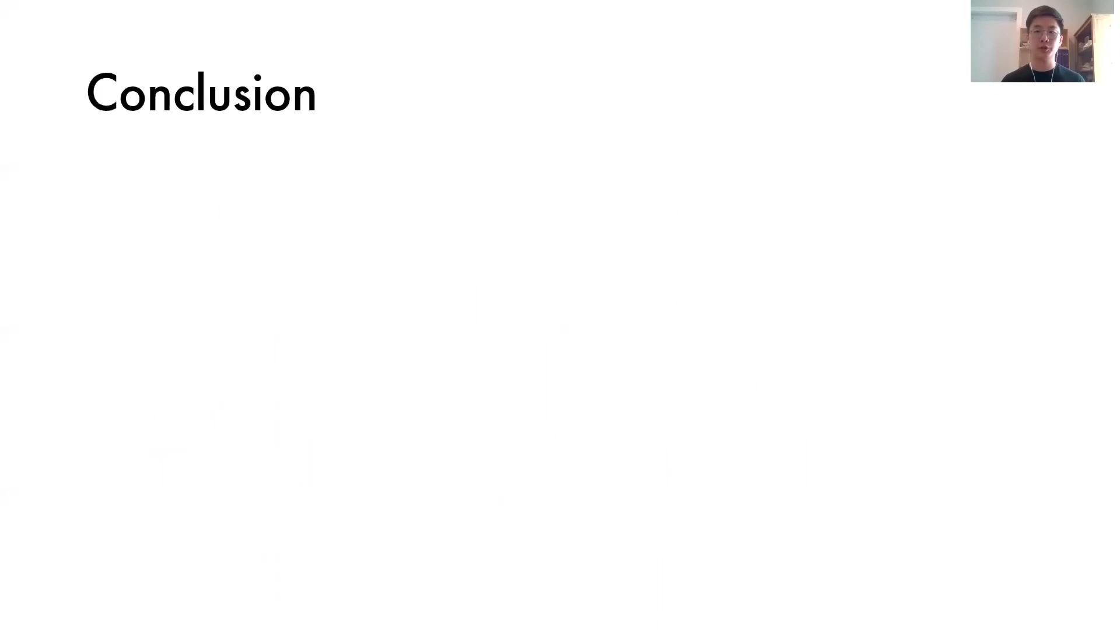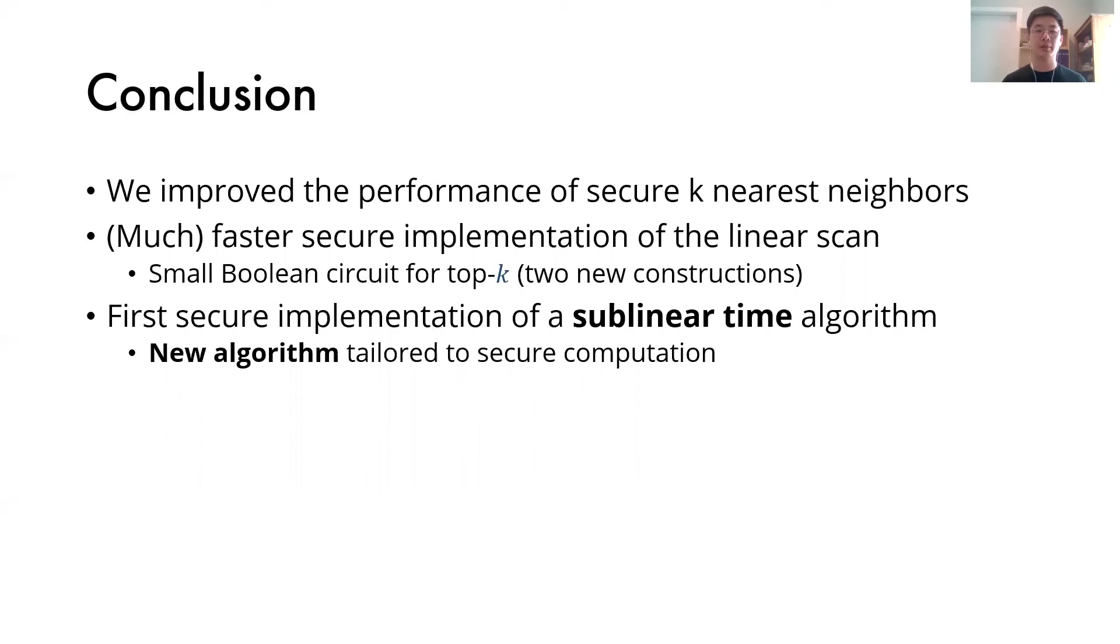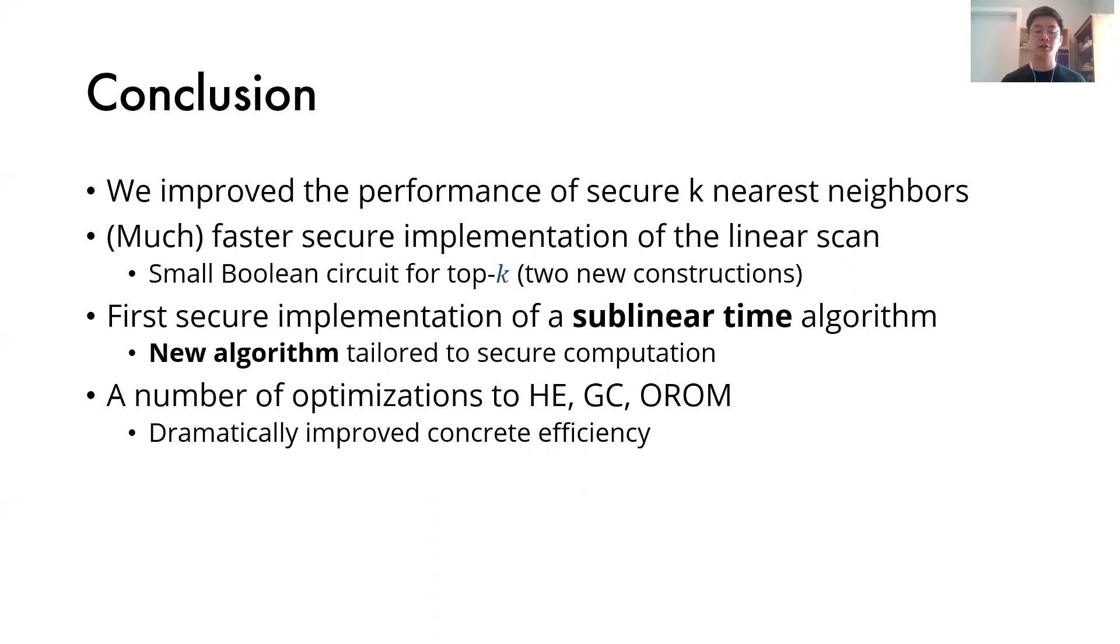To conclude, we improved the performance of secure k-nearest neighbor search. First, we proposed a much faster secure implementation of the linear scan algorithm. We had a small boolean circuit for top-k, and then we have another secure implementation of a sublinear time algorithm, which is a new algorithm that we designed tailored to the secure computation. During our optimizations, we also proposed a number of different optimizations to homomorphic encryption, gobble circuit, and oblivious ROM. These dramatically improved the concrete efficiency.